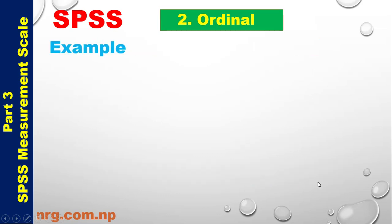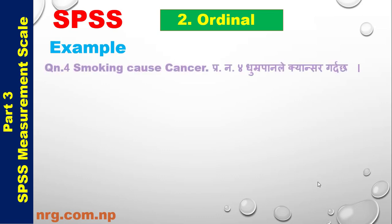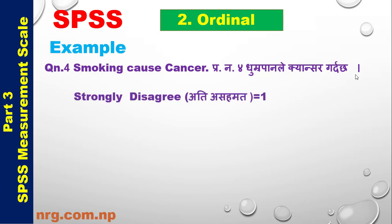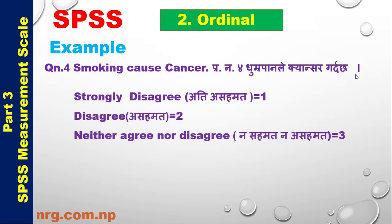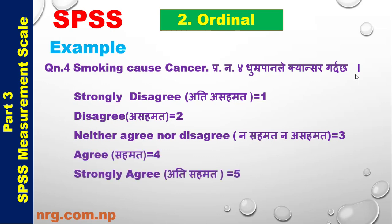Ordinal Scale Example. Question Number 4: Smoking causes cancer. Response options: 1 = Strongly Disagree, 2 = Disagree, 3 = Neither Agree nor Disagree, 4 = Agree, 5 = Strongly Agree.